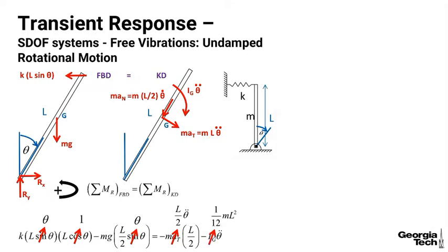So sine theta again here is theta. Cosine of theta for small angles is cosine of zero or one. And acceleration tangential again, we said was in this case L theta double dot, but our moment arm is L over two theta double dot. So this should really be L over two theta double dot because we're looking at the center of the rod.